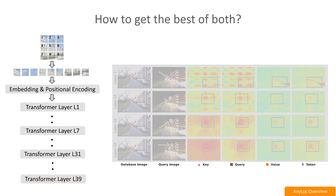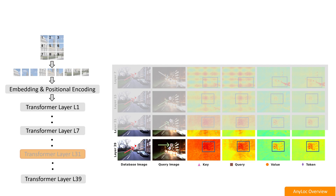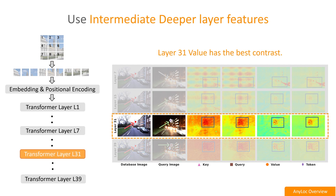So, how do you get the best of both these properties? After further analysis, we observe that selecting features from deeper layers — such as layer 31 and the value facet — offers the best mix of background contrast and positioning accuracy.